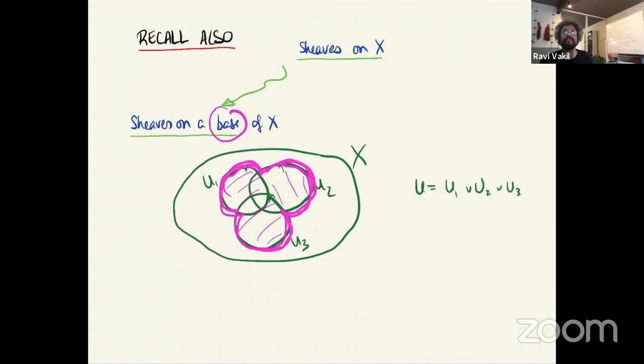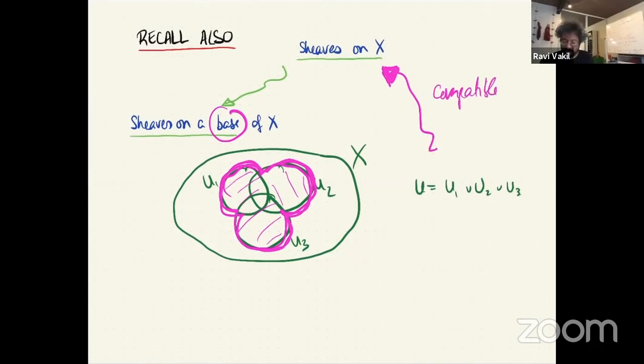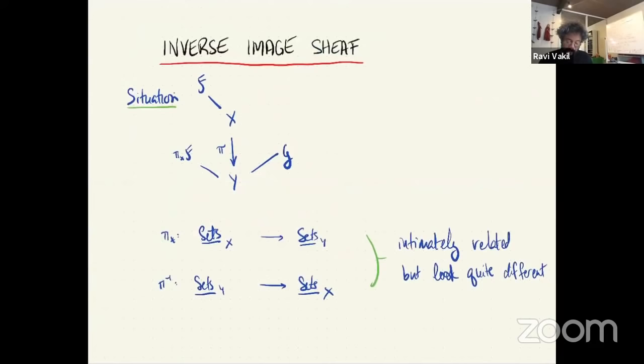How do you go backwards? If I tell you only the restriction of the sheaf to the base, you still know what the germs are, because you can take small open sets in the base containing a point, and this produces the sheaf for you. The thing you need to check once and for all is that if you have the data of a sheaf on a base — which has some axioms — that's enough to know it came from an honest sheaf.